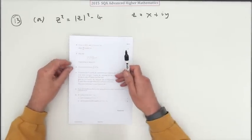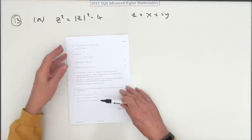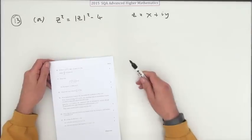Number 13 from the 2015 Advanced Higher Maths. These complex number equations can be a little bit tricky. It tells you to do that, but that's what you'd have to do anyway in the first place, because the only way you solve these is by equating real and imaginary parts.